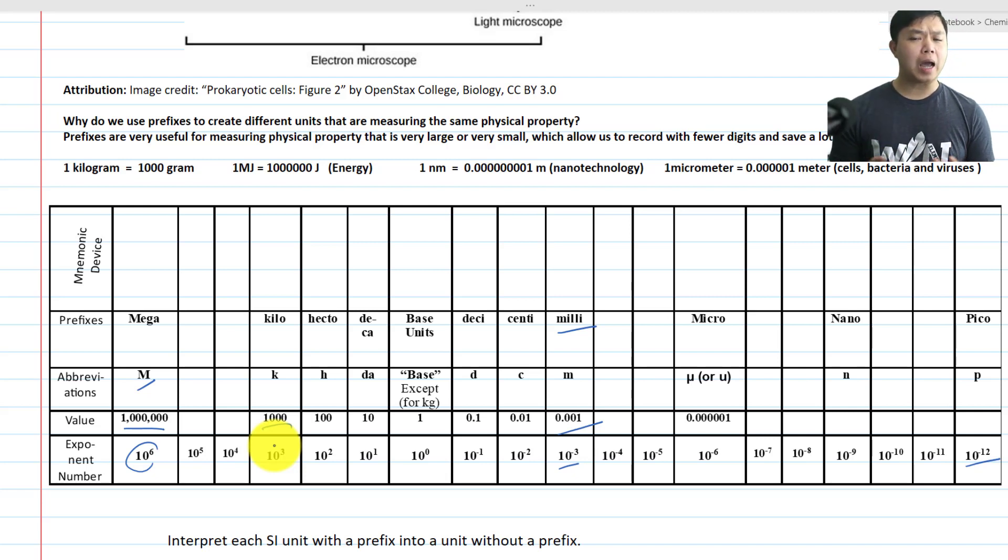The question is, why do we have all those prefixes when they all use to measure the same properties? For example, KILOMETER, PICOMETER, NANOMETER, they all use to measure length. Why do we have prefixes?